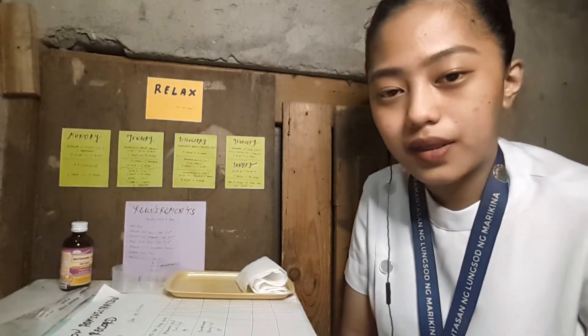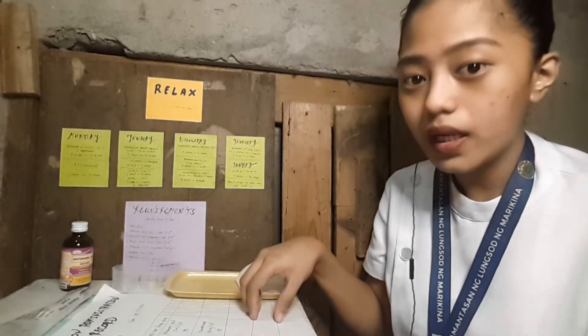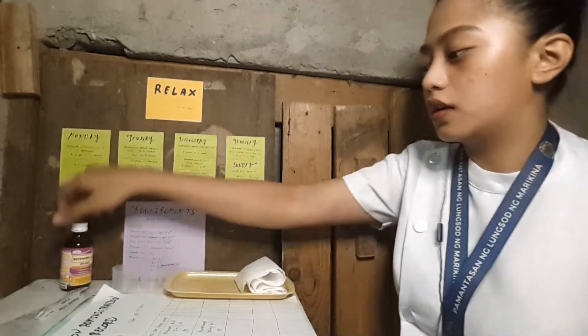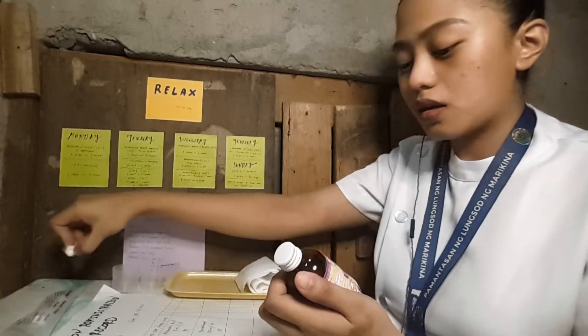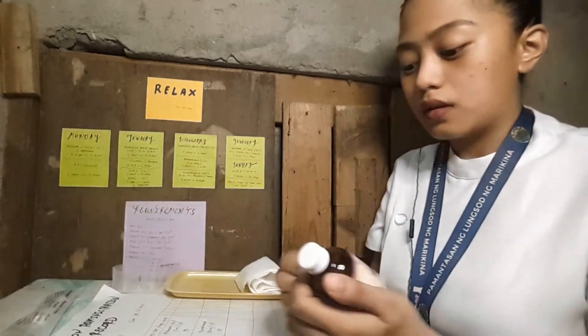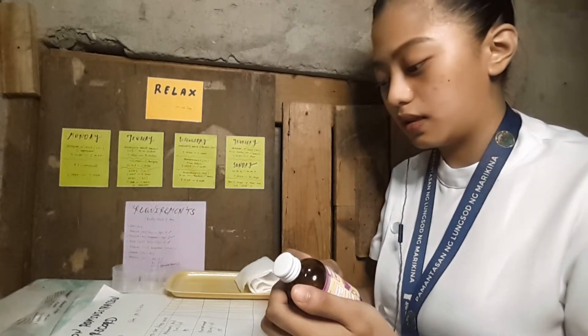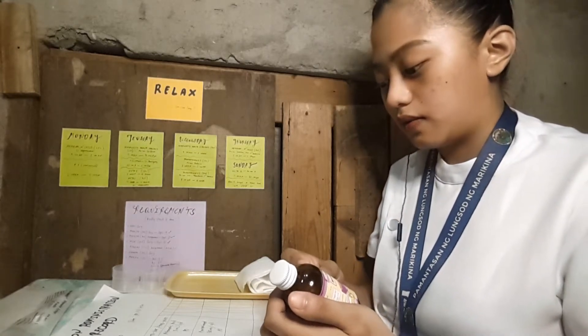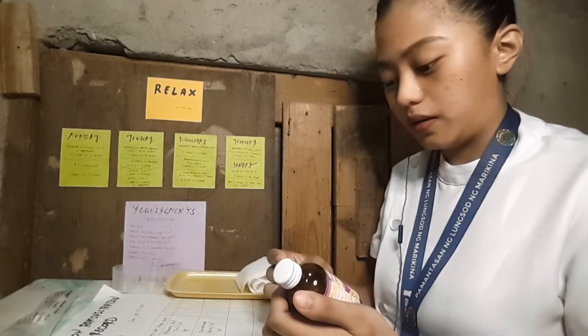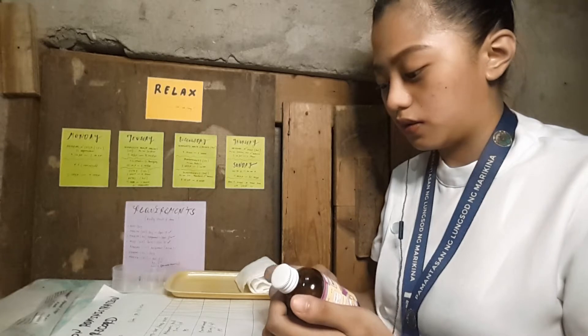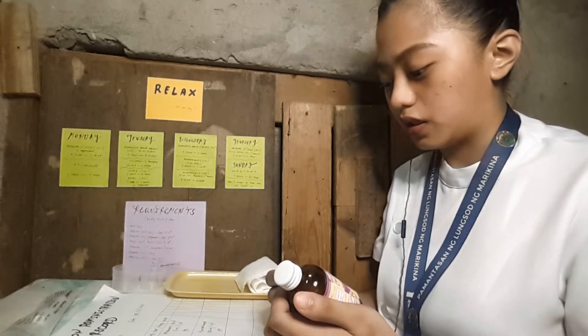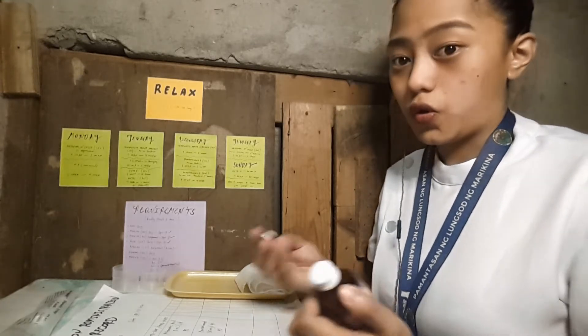The next step is to compare the medication that we got against the MAR. So let's compare: mefenamic acid, 5 ml; paracetamol, 500 mg. They are the same.